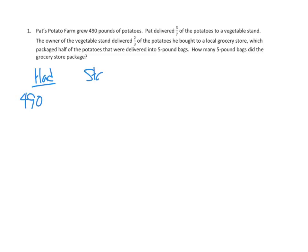Then he delivered a bunch to the stand. Then some of them went to the grocery store. Then some were packaged. So we have to figure out at each stage how many pounds of potatoes there were. First, let's just go right to the first part. Pat's Potato Farm grew 490 pounds of potatoes. Got it. So at the beginning, we have that.